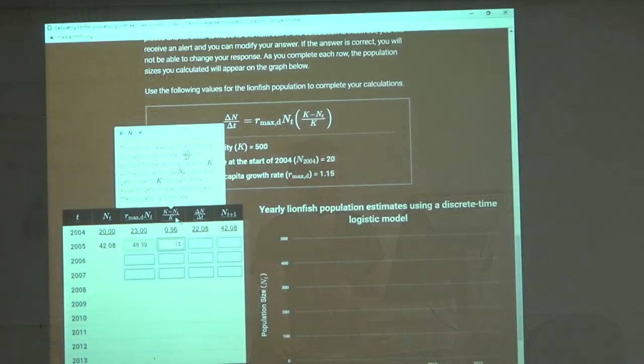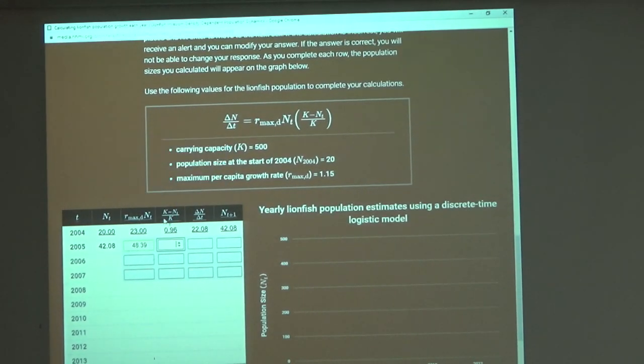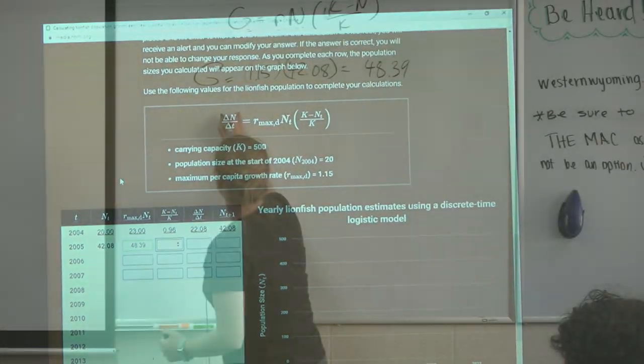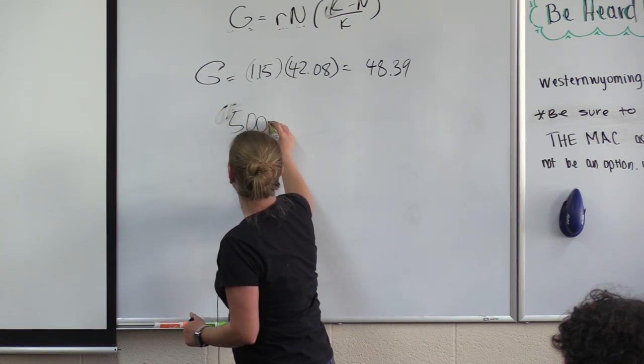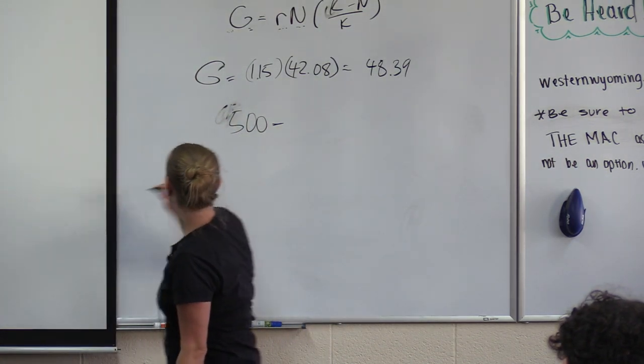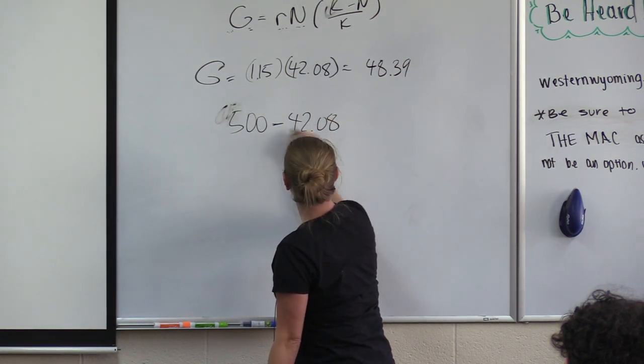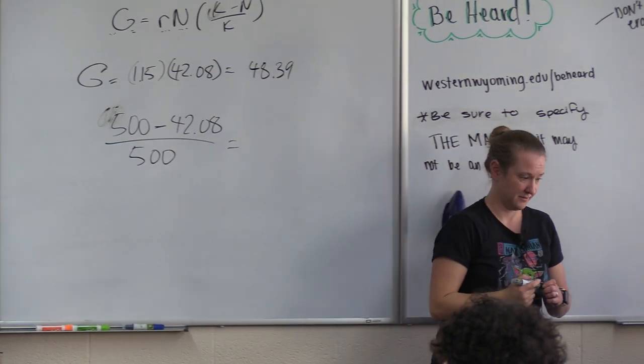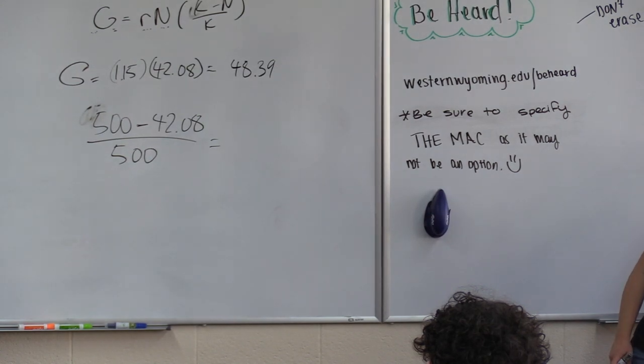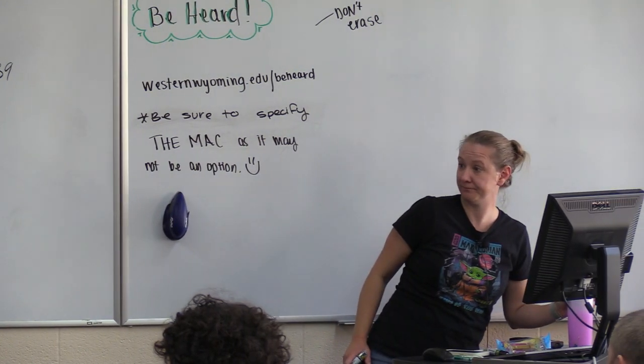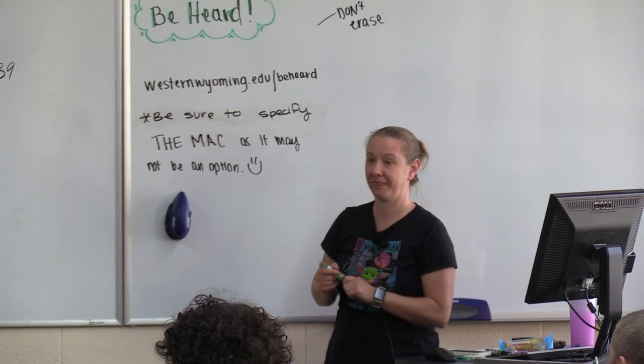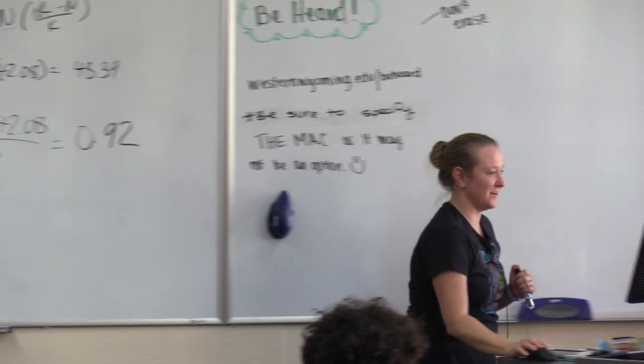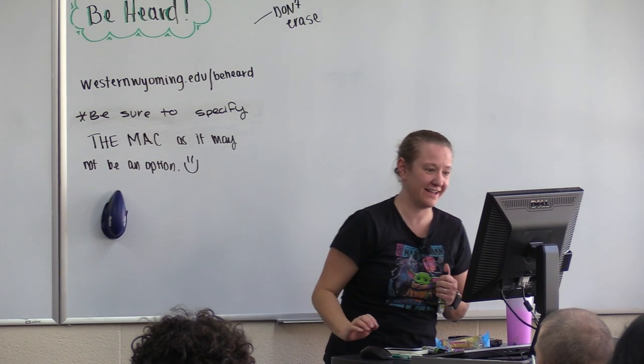So now we're going to calculate this carrying capacity part of the equation. So our carrying capacity is 500. So we're going to take 500 minus our n, which was the 42.08, and divide that by 500. Zero point, thank you, 92.